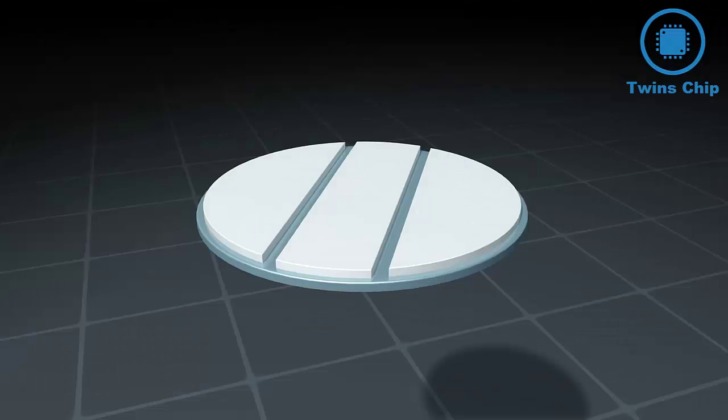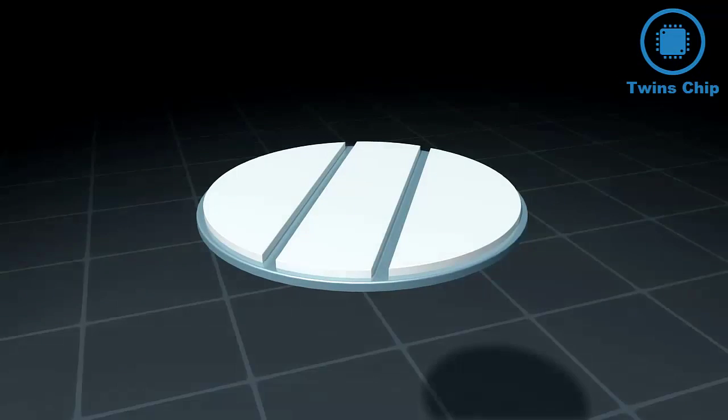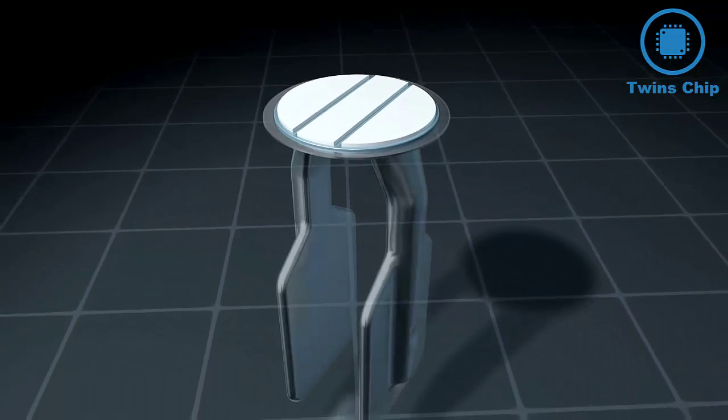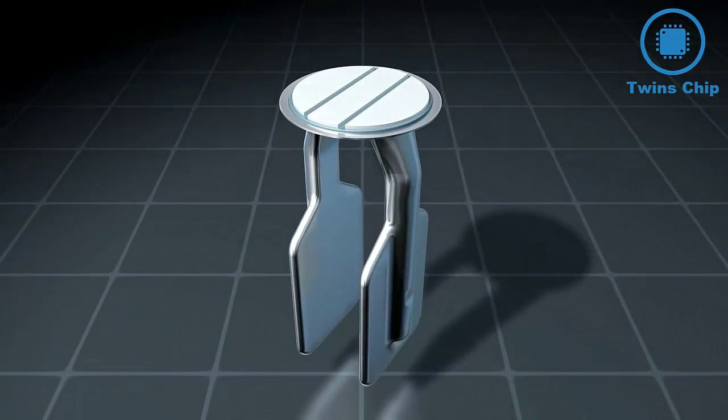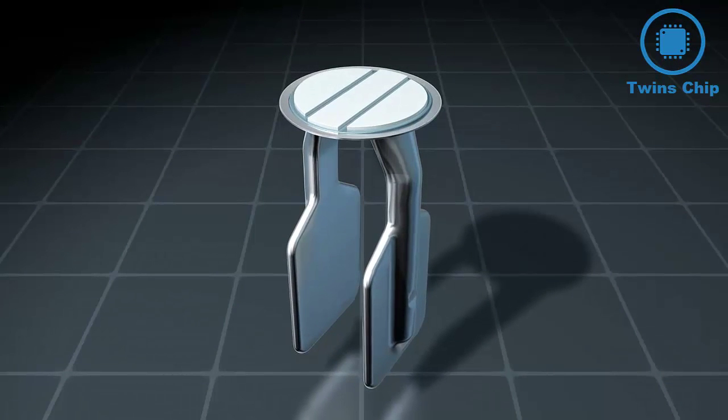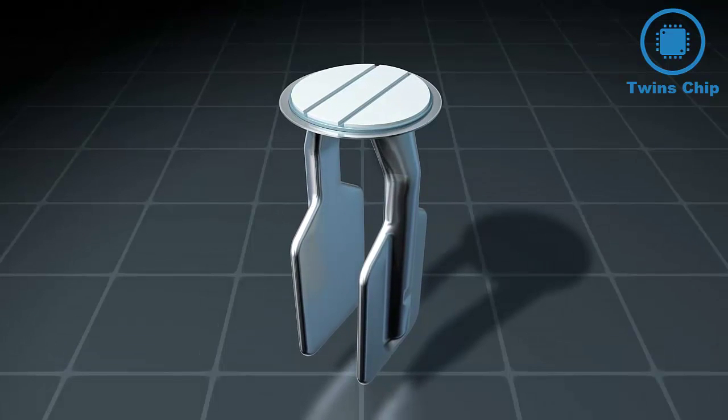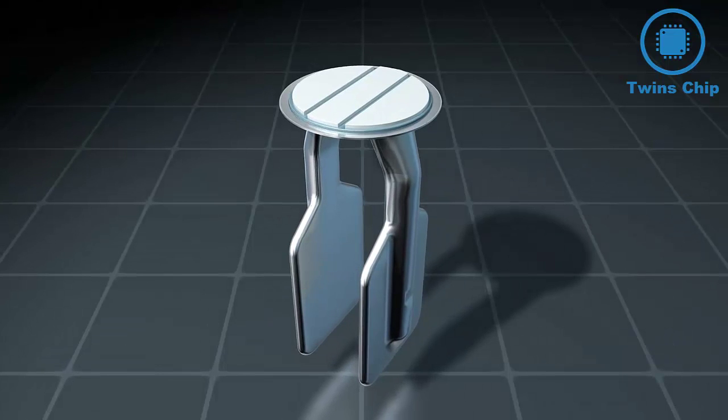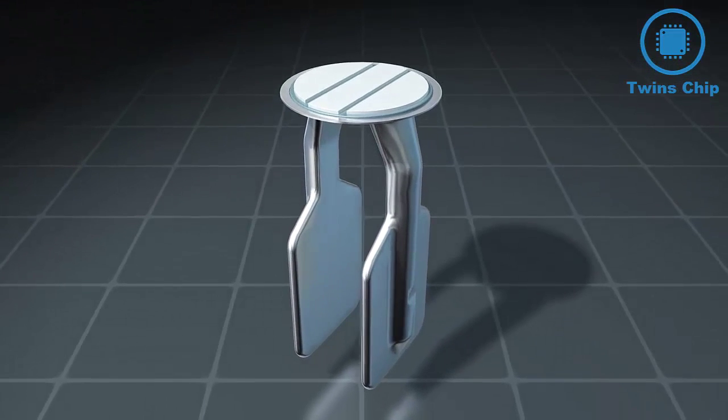The bimorph drive consists of two disks, a piezo and a ceramic disk, which are connected to each other. At the same voltage, the piezos are compressed and the ceramic disk is bent. At different voltages, the piezos expand again. This causes the oscillations of the fork.